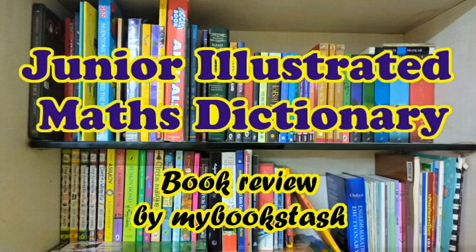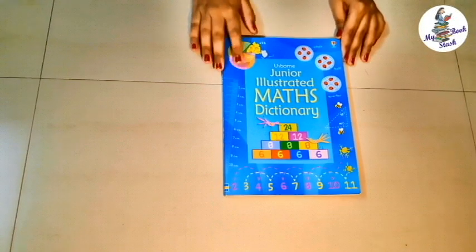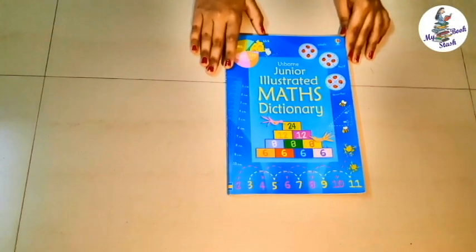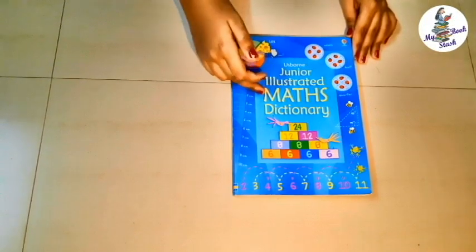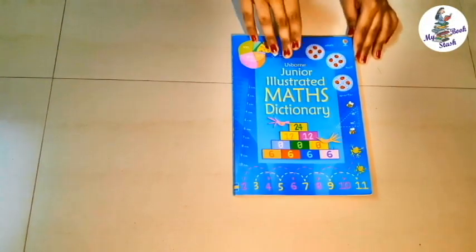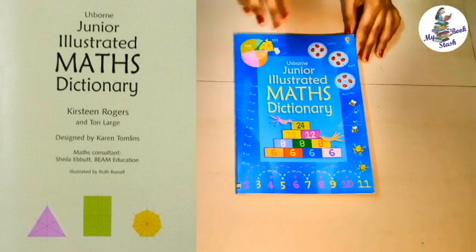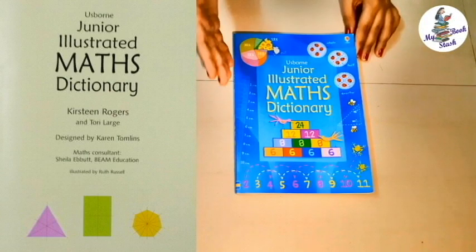Hi friends, this is Sanvi from MyBookstash. I am a 10-year-old book enthusiast. In today's video, I am going to review the book Junior Illustrated Maths Dictionary by Kirsteen Rogers and Tori Large. My mom bought this book online a few months back.